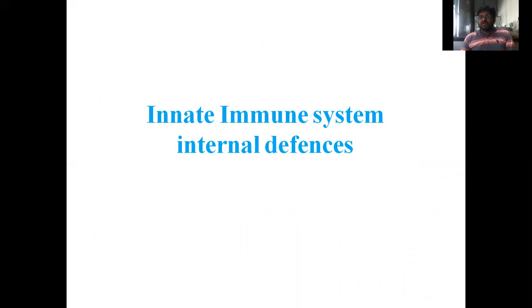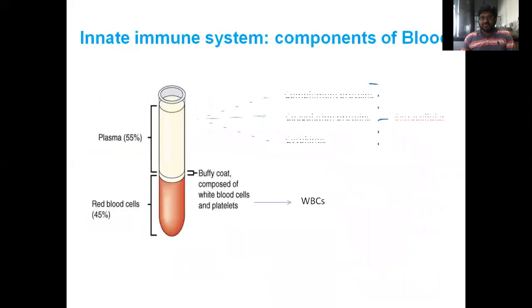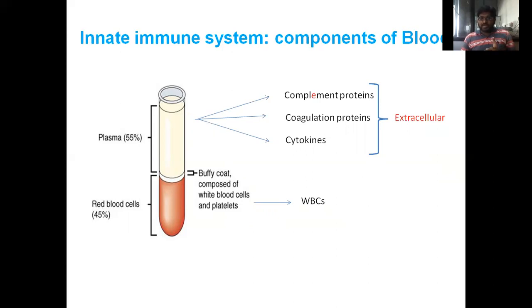Now let's talk about the innate immune system for internal defenses. The innate immune system components of the blood: blood contains two parts — plasma and cells including red blood cells and serum. Plasma contains complement proteins, coagulation proteins, and cytokines. The buffy coat is composed of white blood cells and platelets, known as WBCs. These are important extracellular factors for innate immunity.